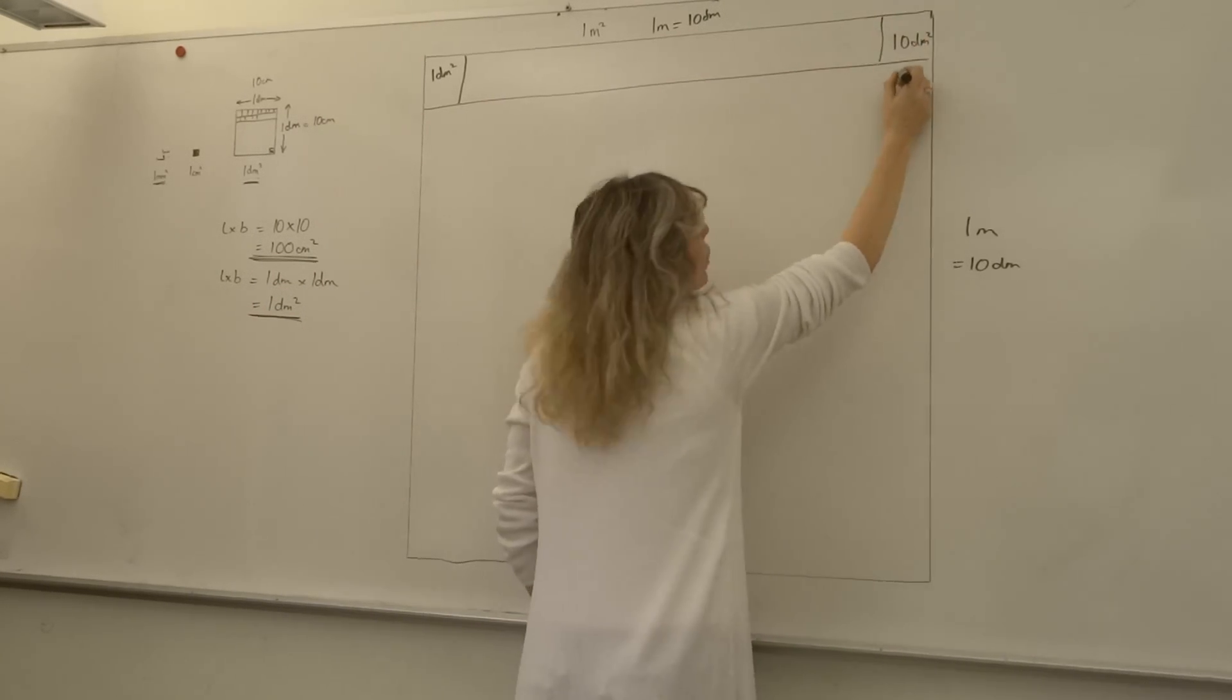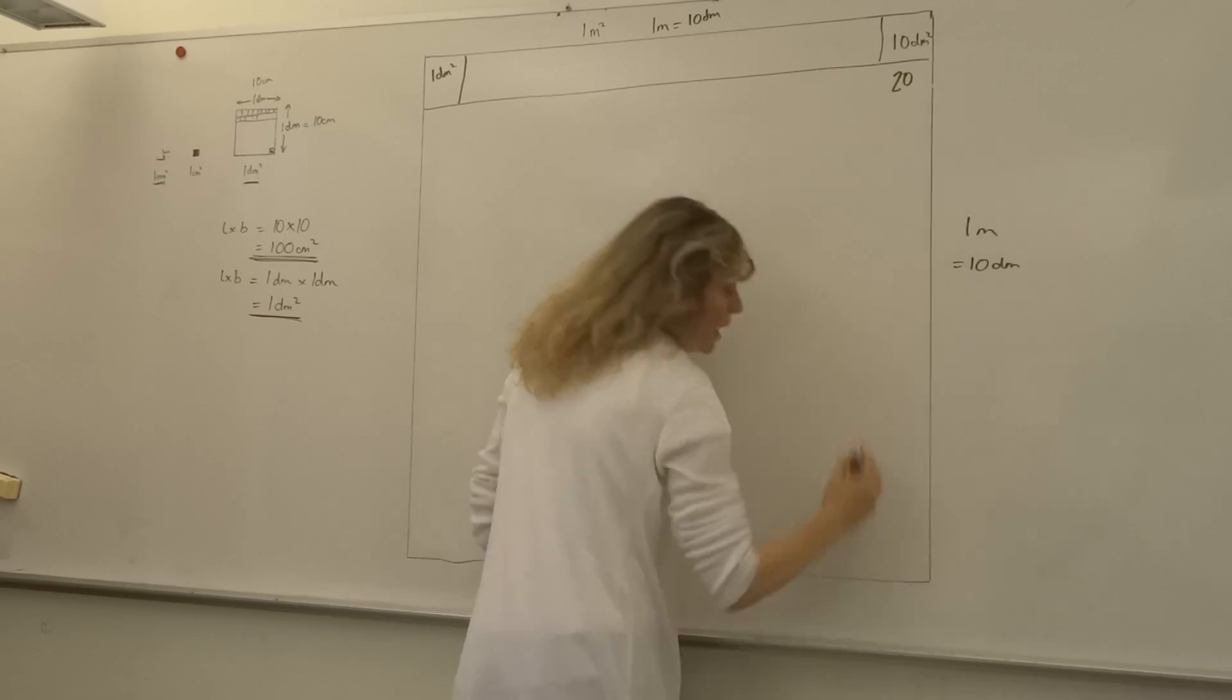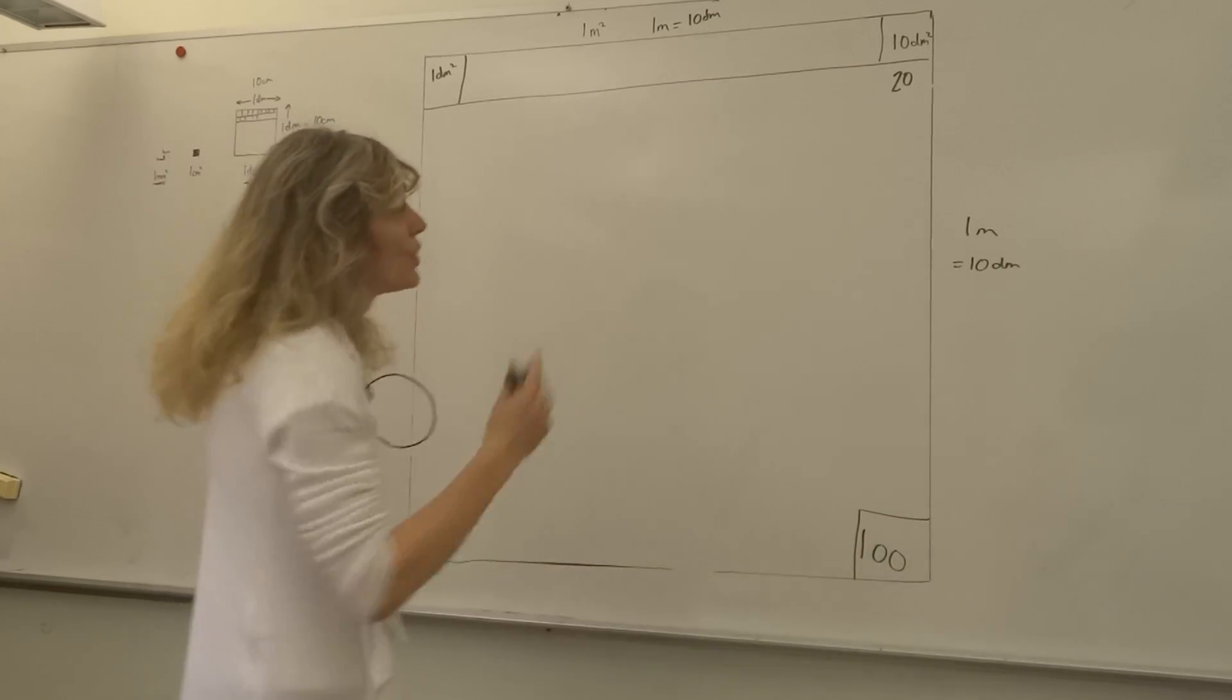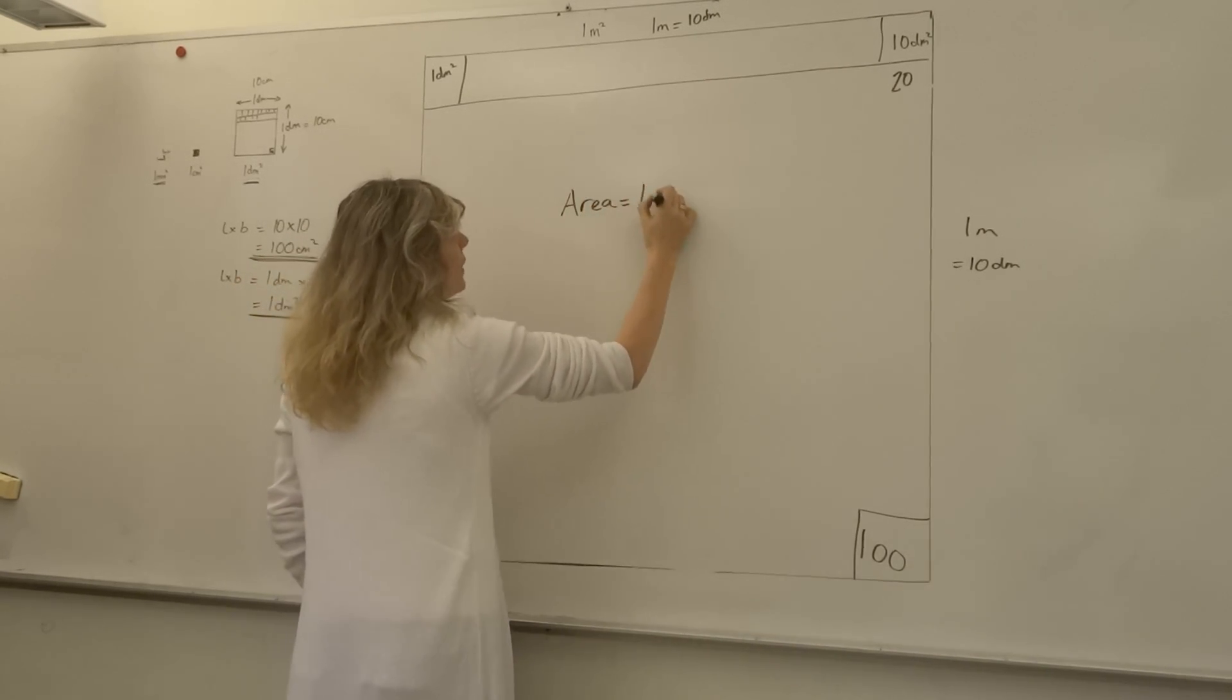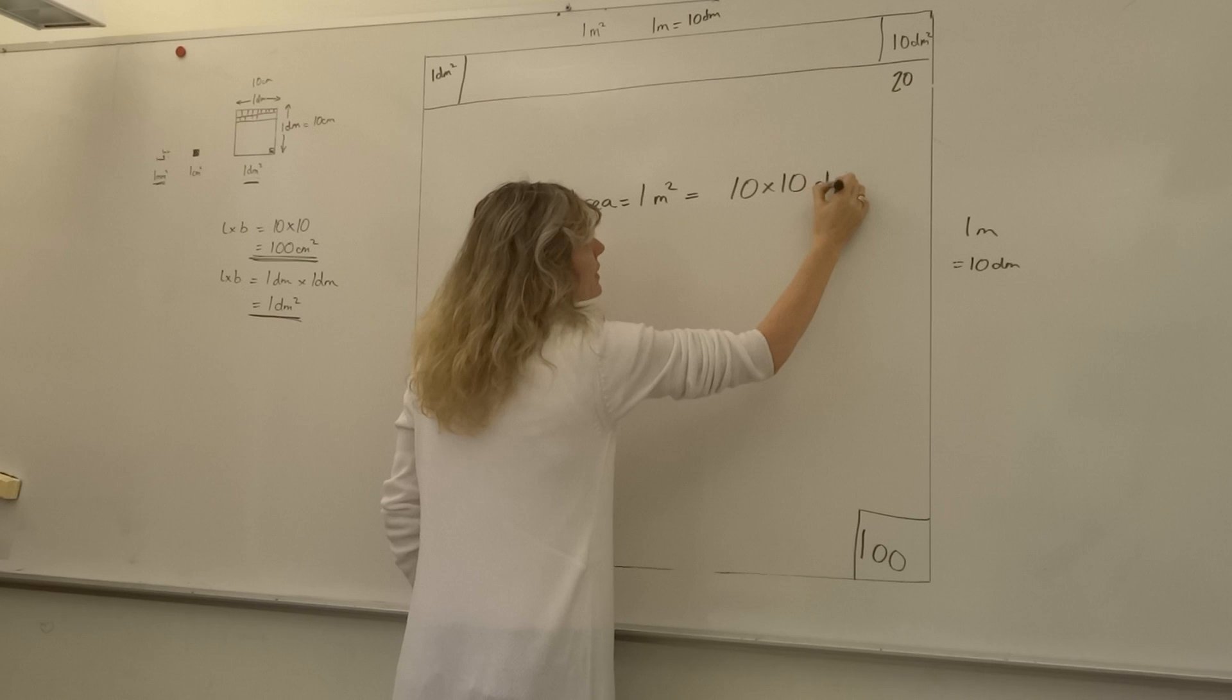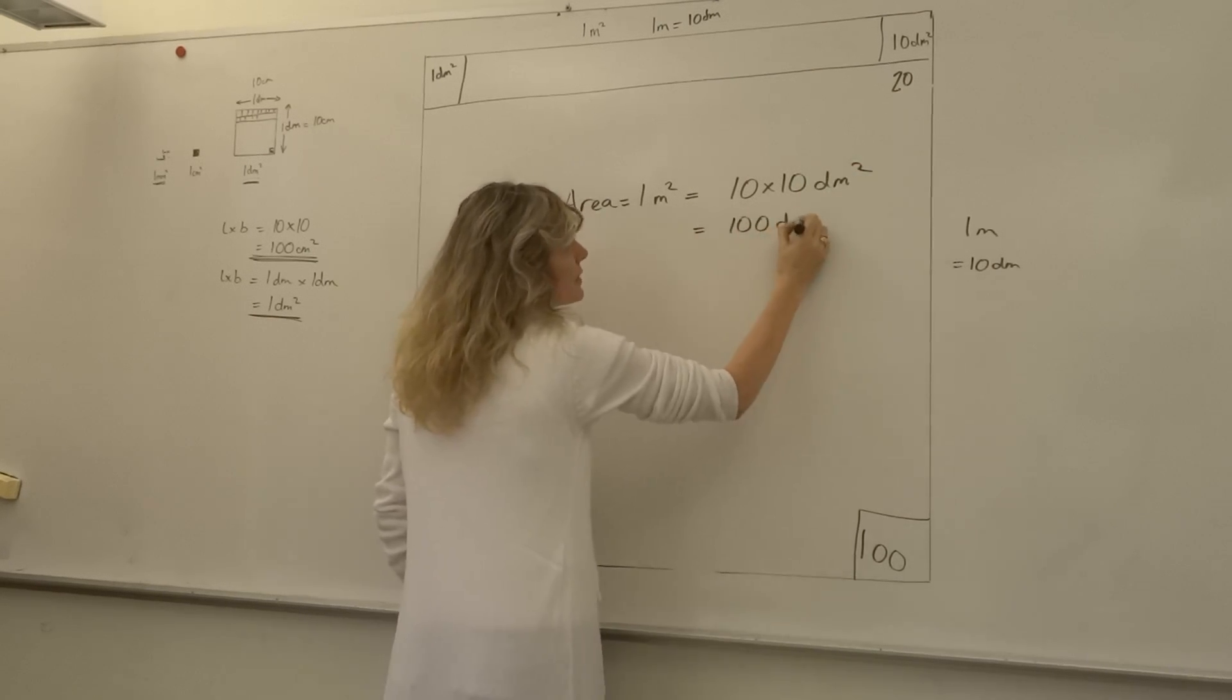I'd have 20, 30, 40... so down here I would end up with my final decimeter squared being 100. So I can say that this area here is one meter squared, which is the same as 10 decimeters by 10 decimeters squared, which is 100 decimeters squared.